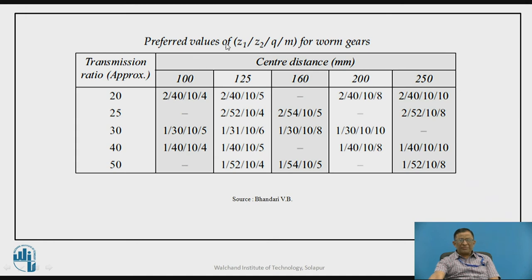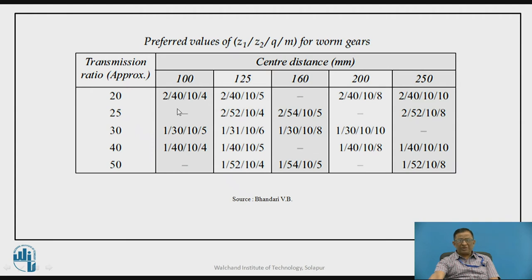There are preferred values of Z1, Z2, Q, and M for worm gears. Worm gears are often available as standard sets or standard gearboxes depending on the center distance between shafts. So depending on transmission ratios — from 20 onwards — and center distance, we can directly refer to preferred values for Z1, Z2, Q, and M for a given application.